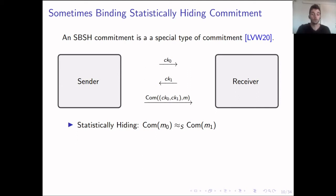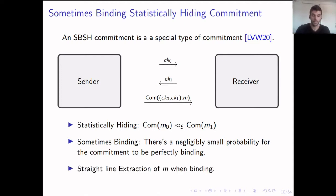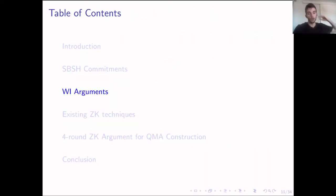SBSH commitments are statistically hiding — commitments of M0 and M1 are statistically indistinguishable — but they are also sometimes binding. This means there is a negligibly small probability for the commitment to be perfectly binding, and if that's the case, we can extract the message M with a straight-line extractor. We'll see how we use them in our witness indistinguishability argument construction.